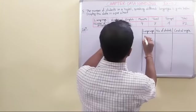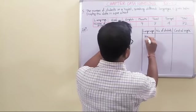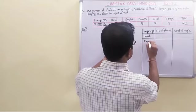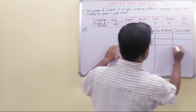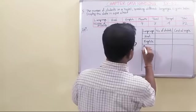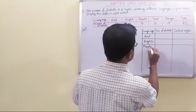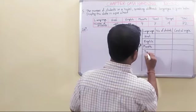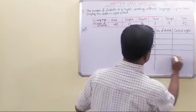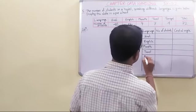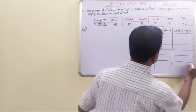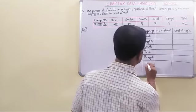So let us write the different languages. At first, Hindi. Then English. Then Marathi. Then Tamil. Then comes Bengali. The total is, yeah, let us say total.